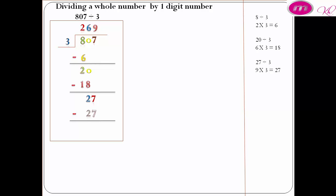27 minus 27 equals 0. The result is 269.